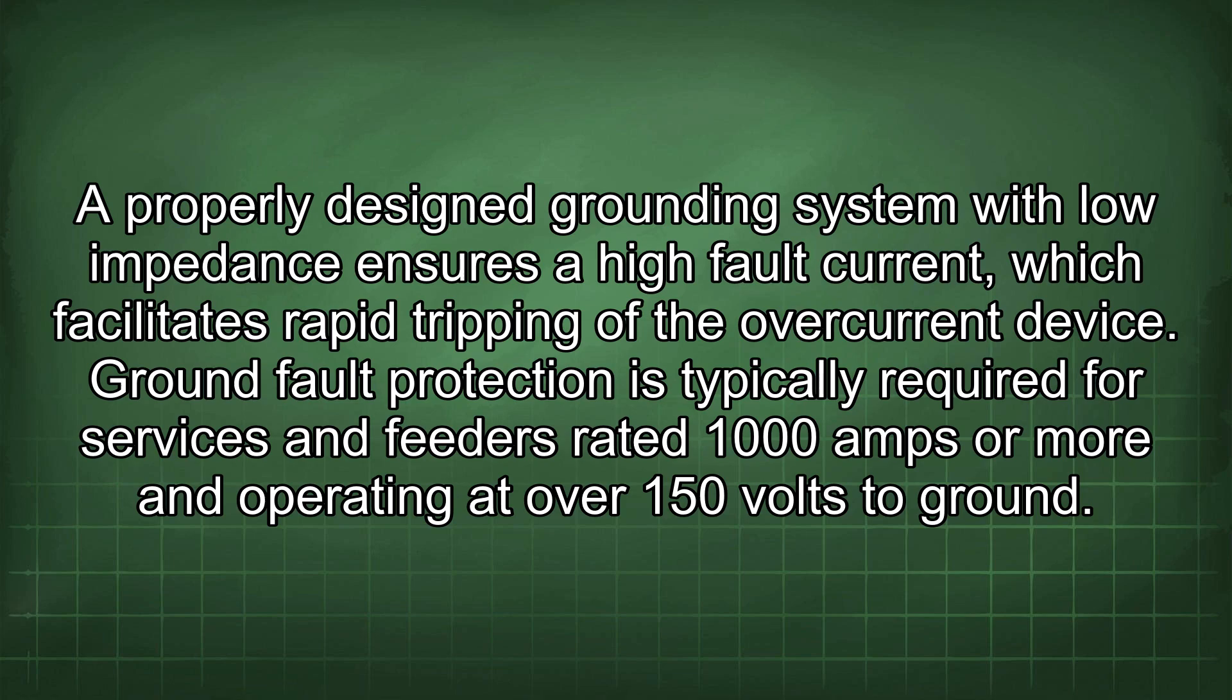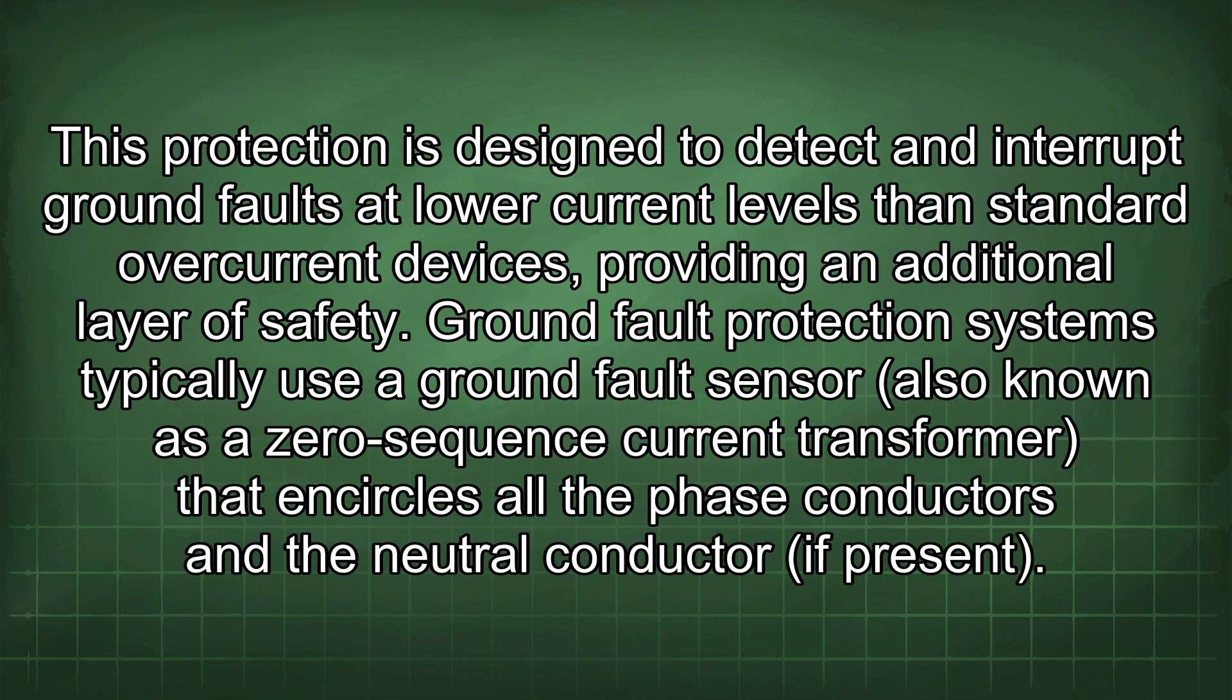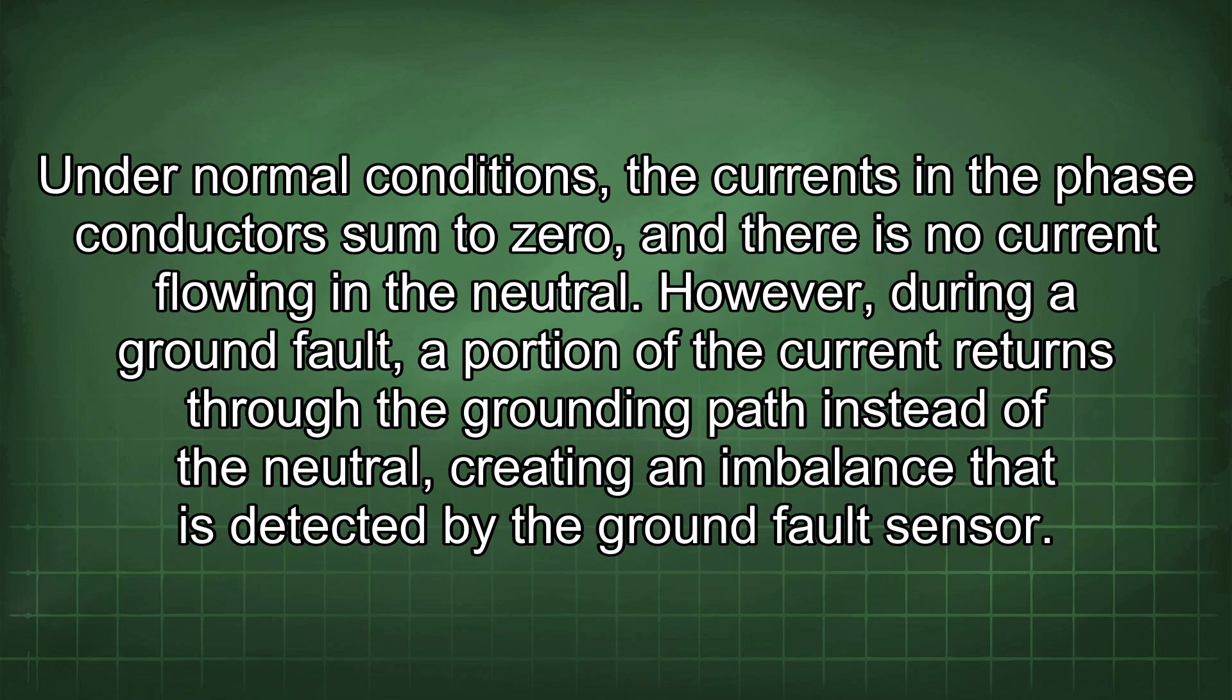Ground fault protection is typically required for services and feeders rated 1000 amps or more and operating at over 150 volts to ground. This protection is designed to detect and interrupt ground faults at lower current levels than standard overcurrent devices, providing an additional layer of safety. Ground fault protection systems typically use a ground fault sensor, also known as a zero sequence current transformer, that encircles all the phase conductors and the neutral conductor if present.